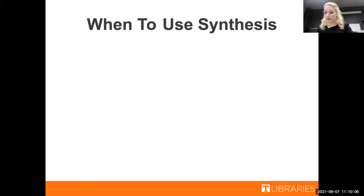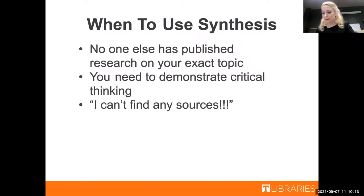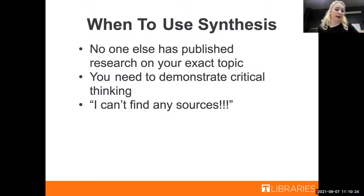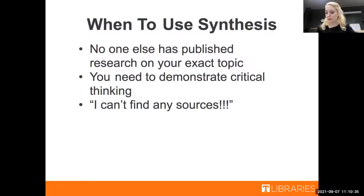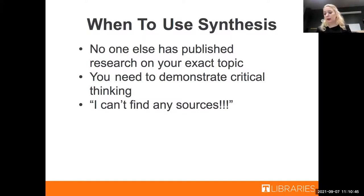Now let's talk about when to use synthesis. The biggest example is when you're researching a topic and no one else has published research on your exact topic. This could be the case when you're familiar with the literature and know there's a gap, and the purpose of your research is to fill that gap. It could also be the case that you're researching something relatively new and you're trying to be innovative. For example, when I was an undergraduate studying psychology, several of my peers wanted to look into Instagram and how it would affect women's body consciousness. At the time, Instagram was new enough that not a lot of scholarly literature had been published on it, so my peers had to go about their research in a more roundabout way.